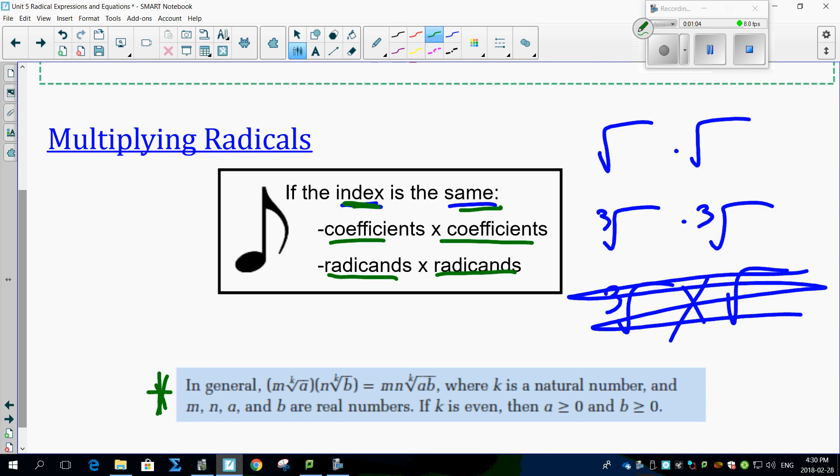But basically what this is telling you is here's a mixed radical with an M up front and an N up front. So you're just going to multiply the M by the N. There you go. Then, if you notice, you have an A in here and a B in here. And all you're going to do is multiply the A by the B. That's it.